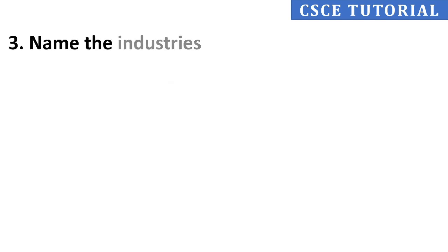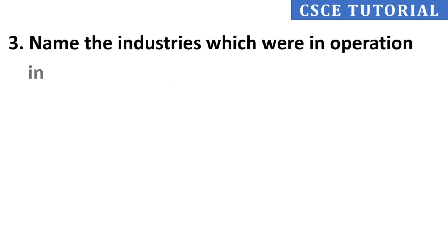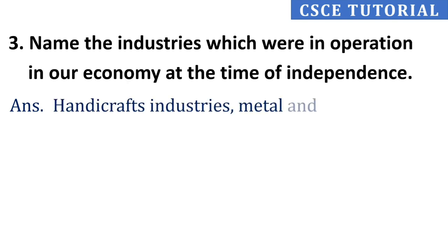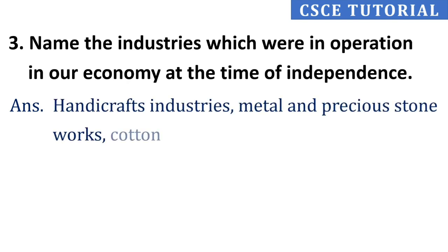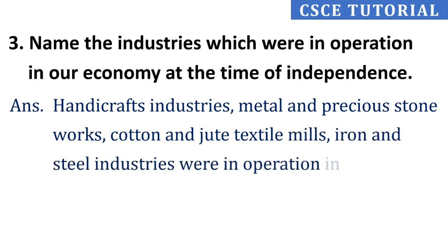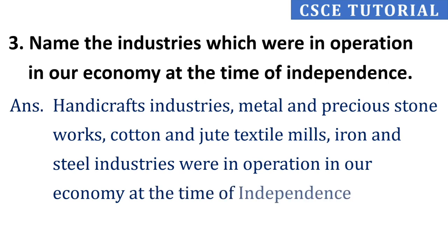Third question: Name the industries which were in operation in our economy at the time of independence. Its answer is, handicraft industry, metal and precious stone works, cotton and jute textile mills, and iron and steel industries were in operation at the time of independence.